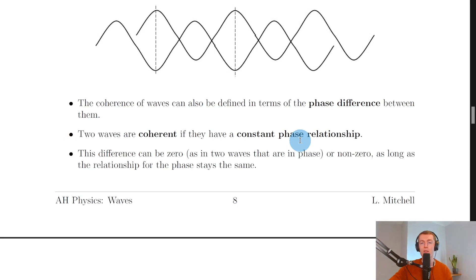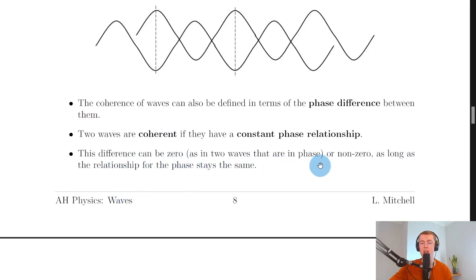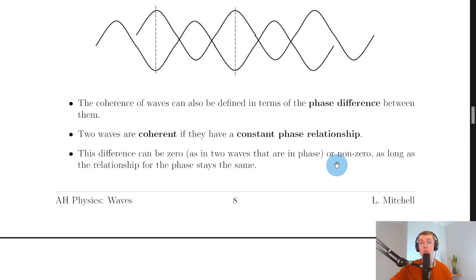Two waves are coherent if they have a constant phase relationship. If asked what it means for two waves to be coherent, this is the definition to use — you could also mention they have the same frequency, wavelength, and speed. The phase difference can be zero, as in two waves in phase, or non-zero, as long as the relationship stays constant. We don't want one wave to catch up with another or have a higher frequency, as that would change the phase difference.